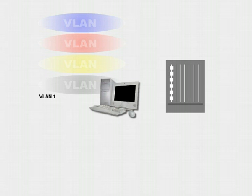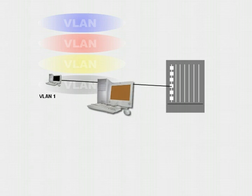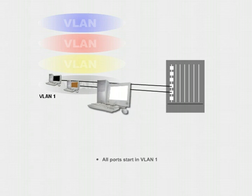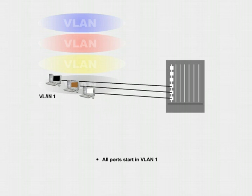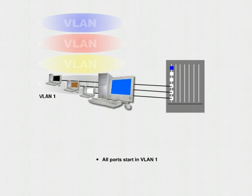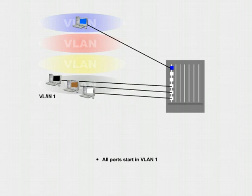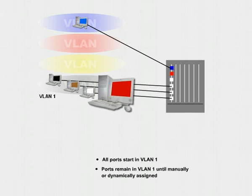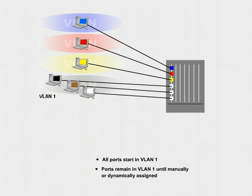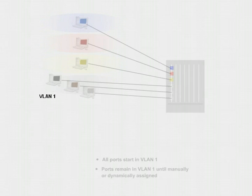In its default configuration, an OmniSwitch has only one VLAN. This is known as the default VLAN. Every port belongs to the default VLAN, or VLAN 1, initially. The port remains in this default VLAN until it is manually placed, or dynamically assigned via a VLAN policy, to another VLAN.